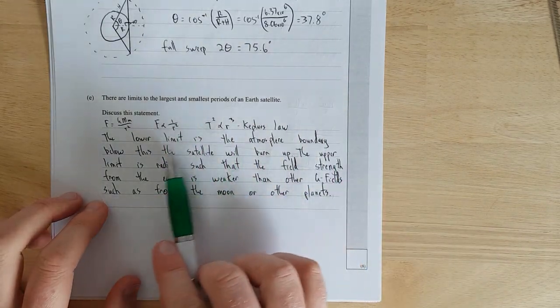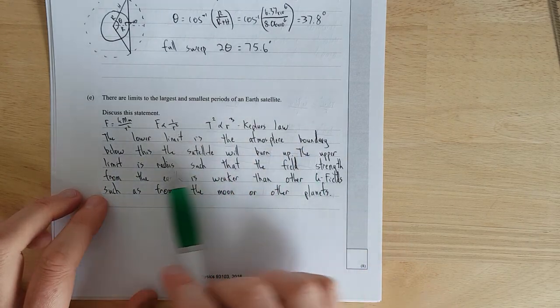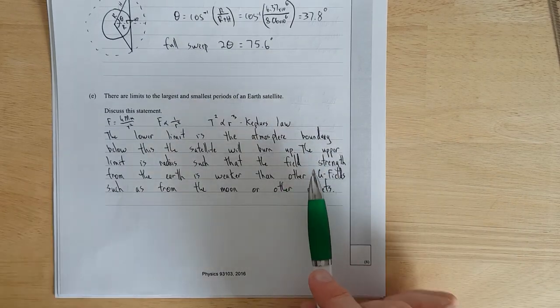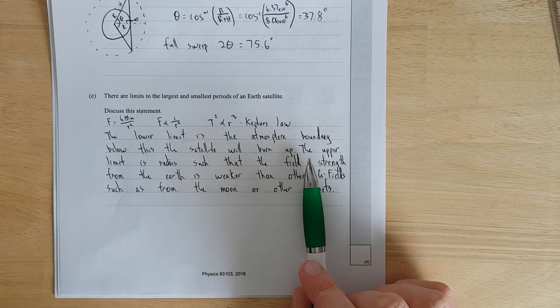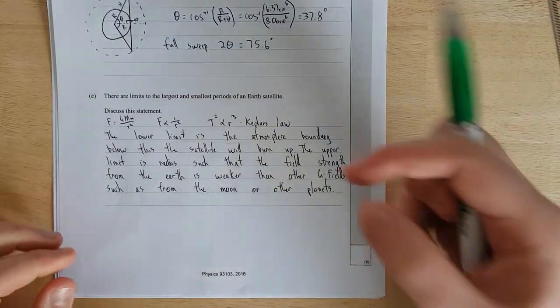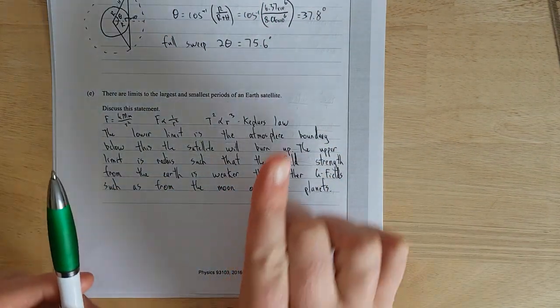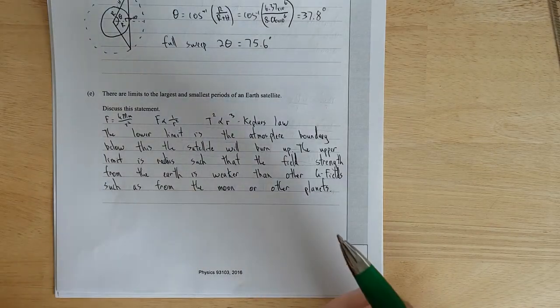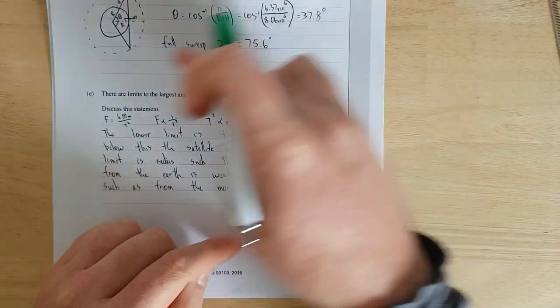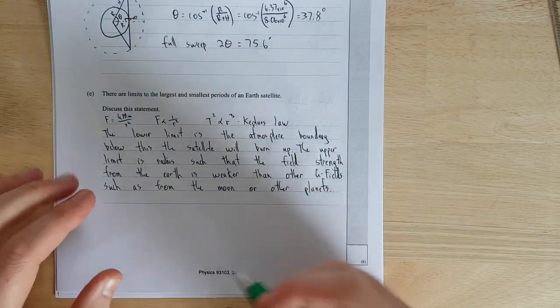And then from there we can go from the period to the radius which then we can say the lower limit is the atmosphere boundary below this the satellite would burn up which is totally true because you have to have such high velocities to maintain your orbital period, otherwise you start falling towards the Earth. If you were stationary just above the Earth you literally just fall down so if you shot a rocket from the Earth straight up at rocket speeds it would get to a point above the Earth if it had no tangential velocity it wouldn't actually get into orbit whatsoever it would just fall straight back down.